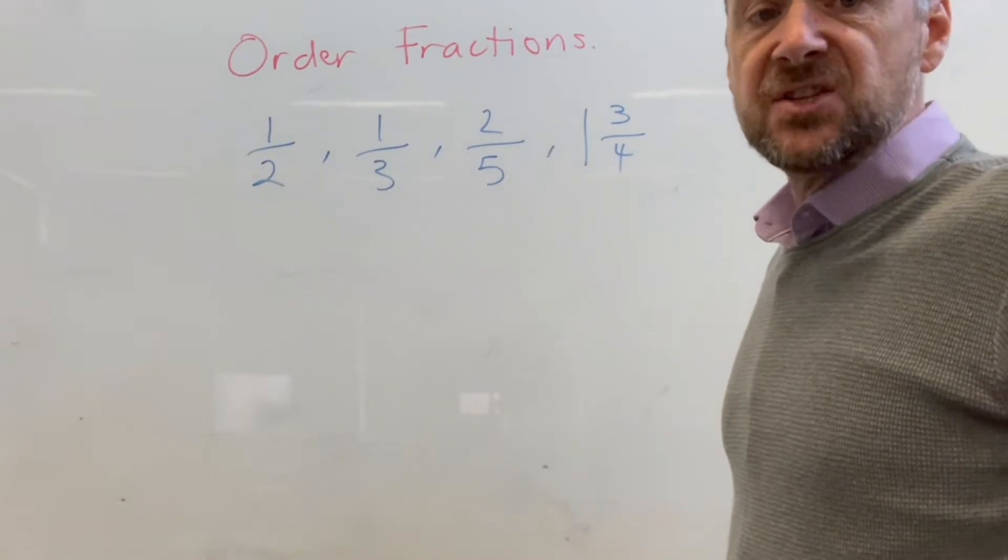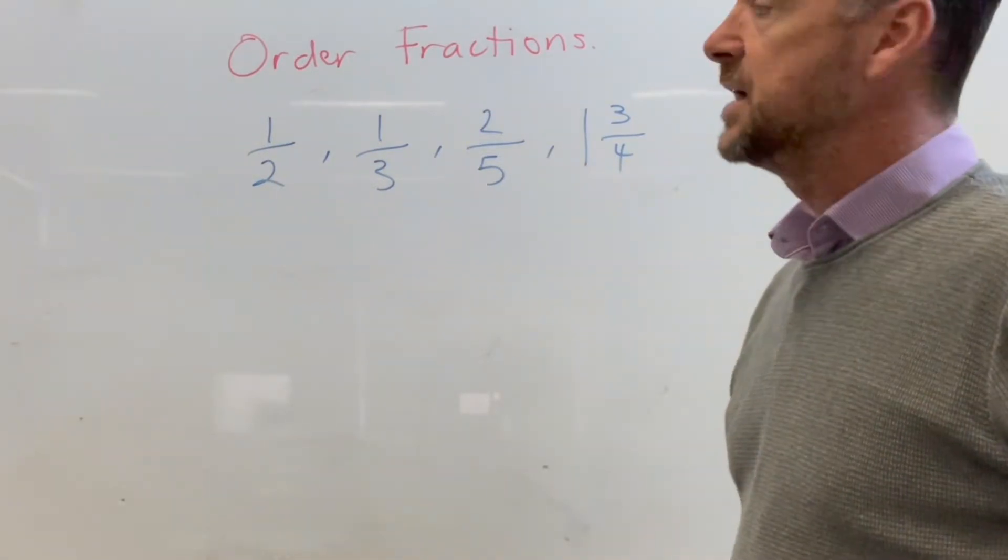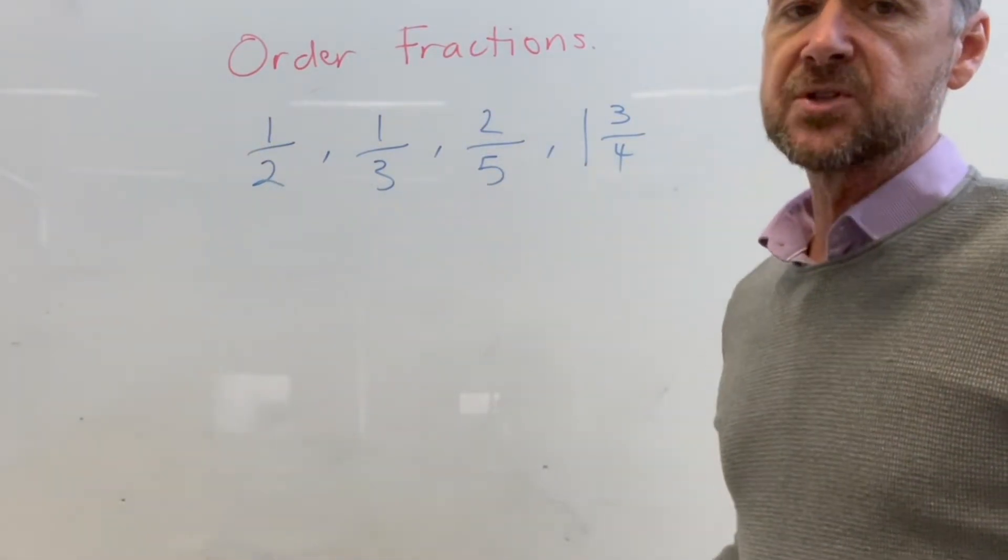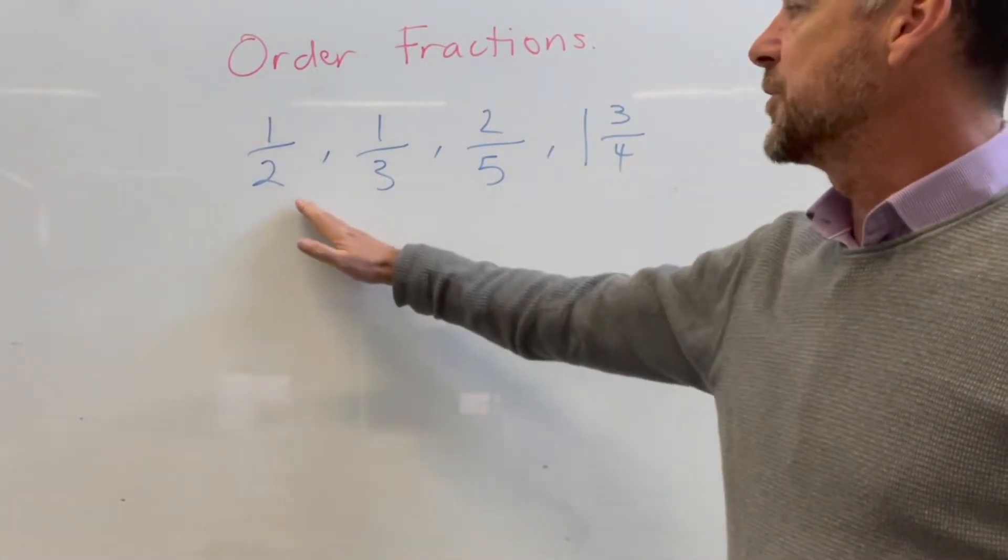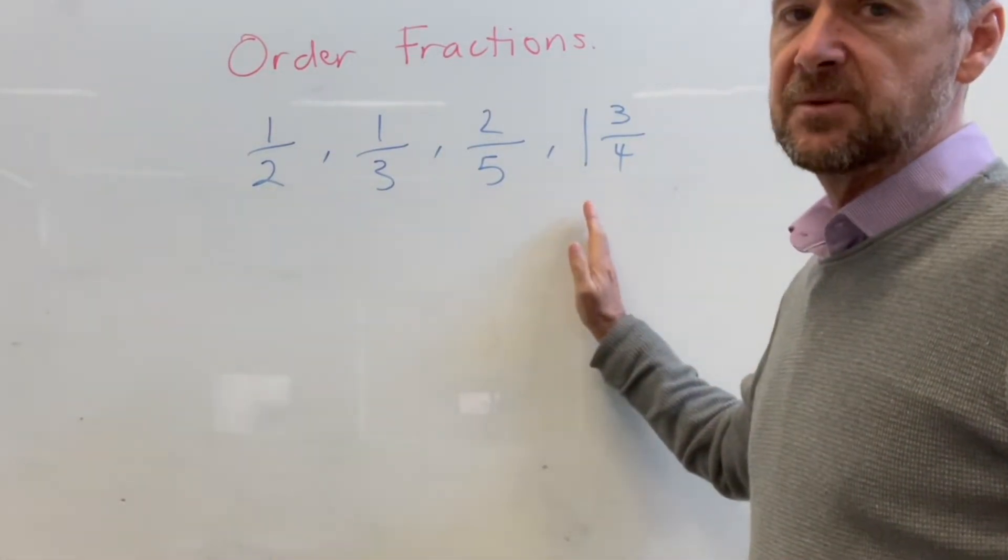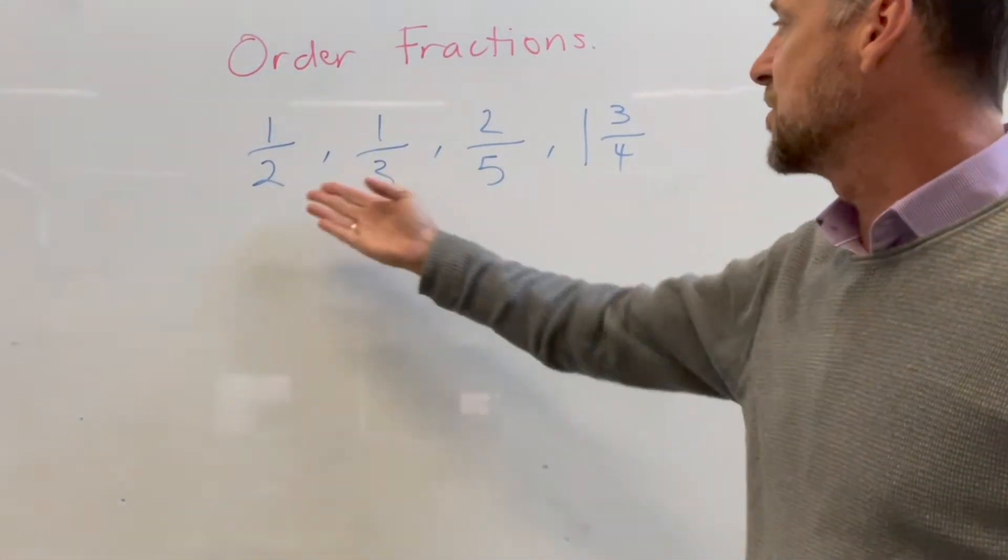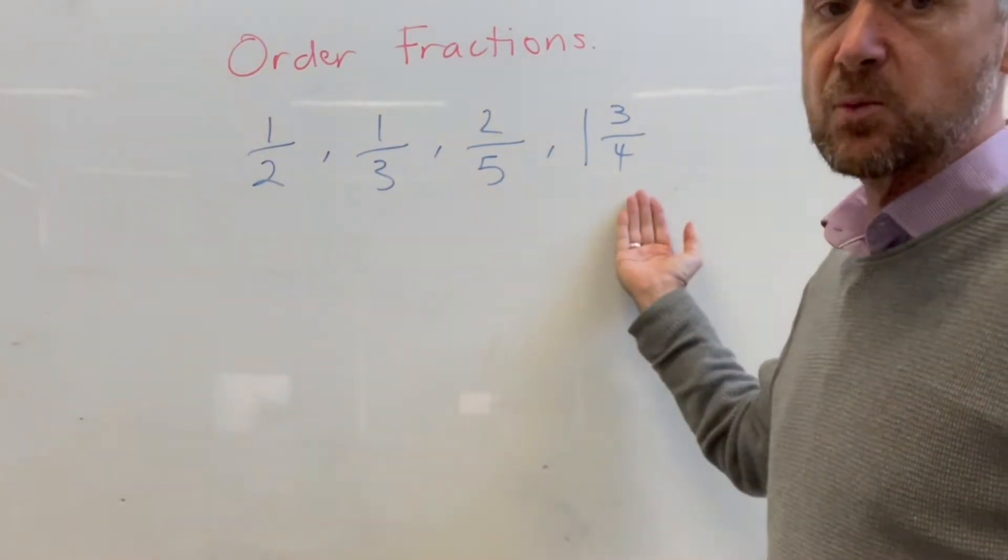A common question type we'll get is the ordering of fractions, and so typically with these what we will see is fractions that are given to us in a couple of formats often. So this one we've got a couple of common fractions and we've got one mixed number.